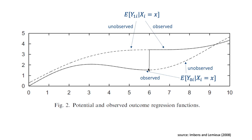The whole idea of this approach is to go local — to look only at x around 6, very close to 6 — and argue that whether you're just above or just below 6 is essentially random, as good as randomization. So we can compare the average outcome for those with x just below 6 to the average outcome for those with x just above 6, and this tells us the treatment effect given that x equals 6.